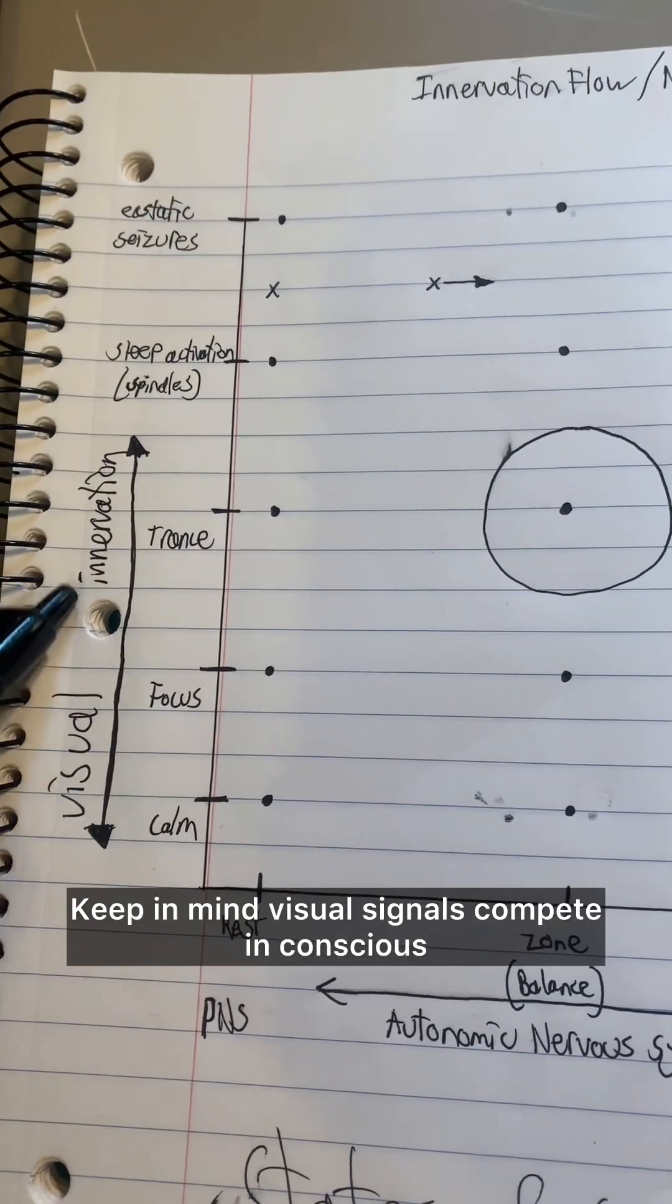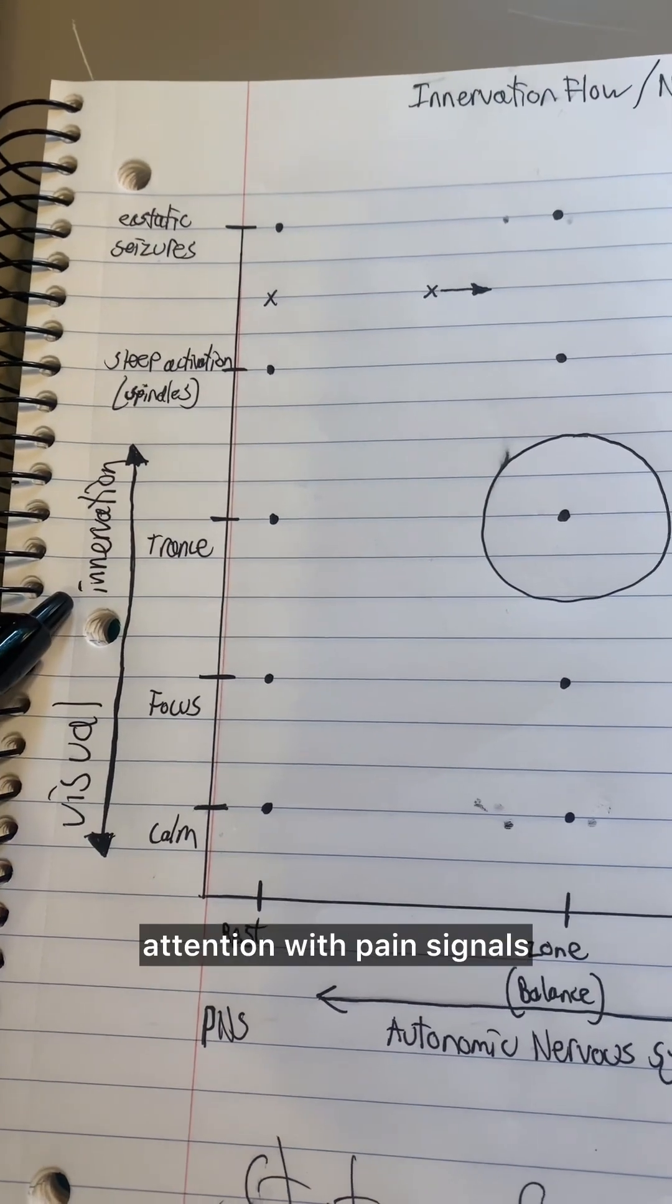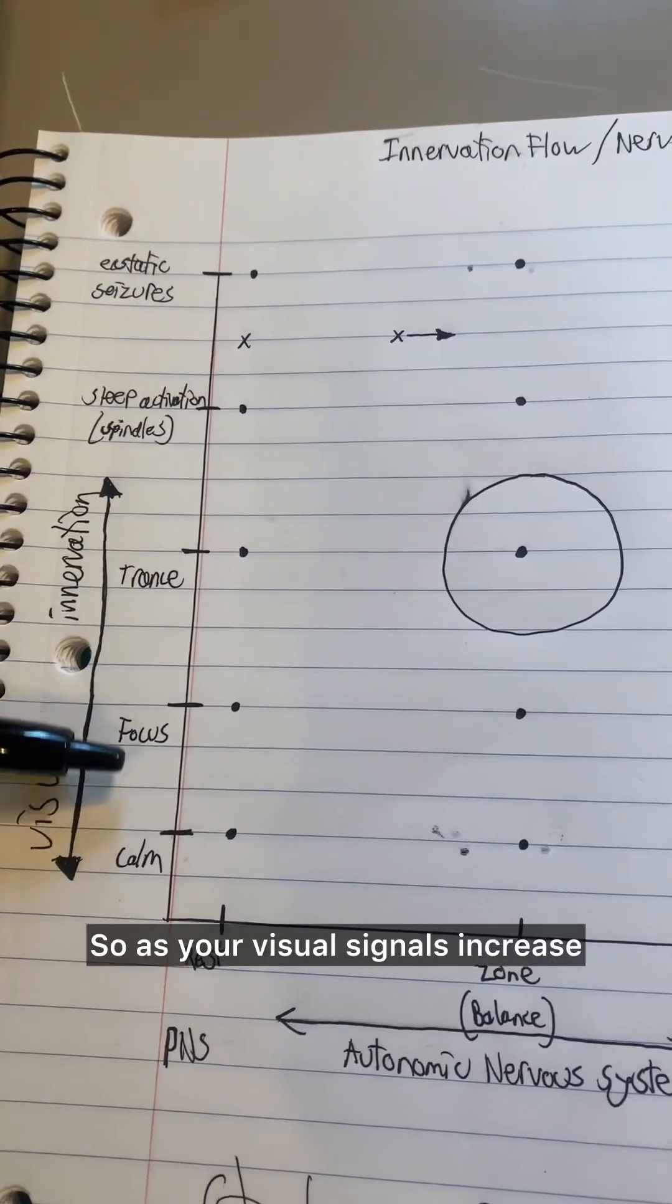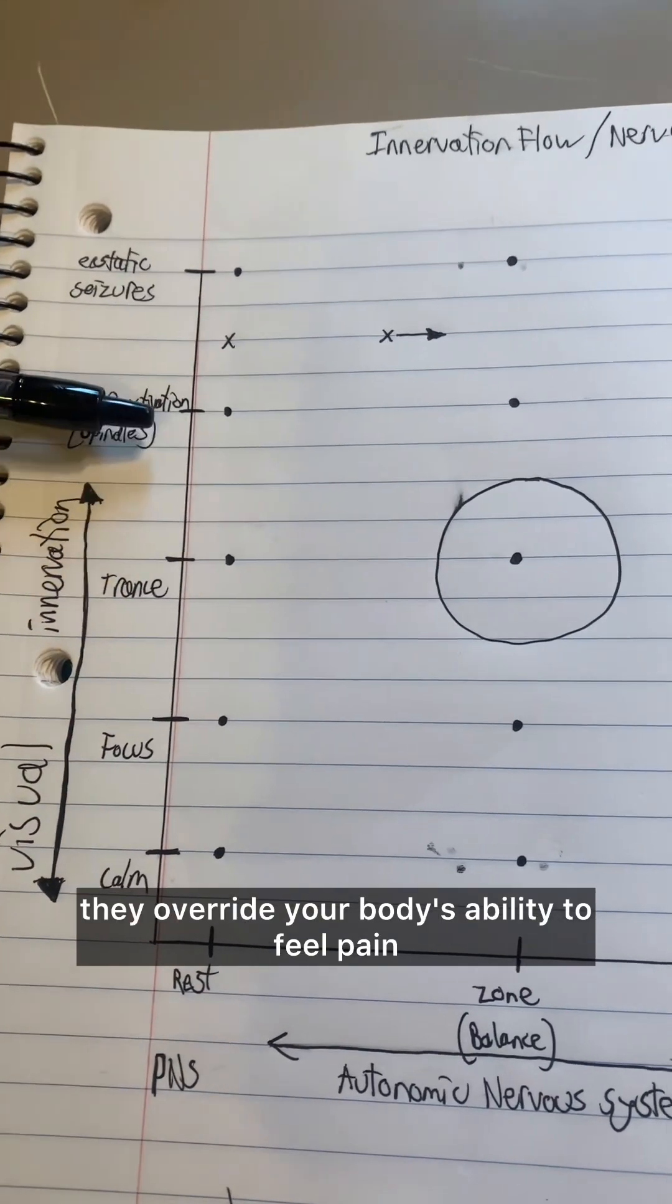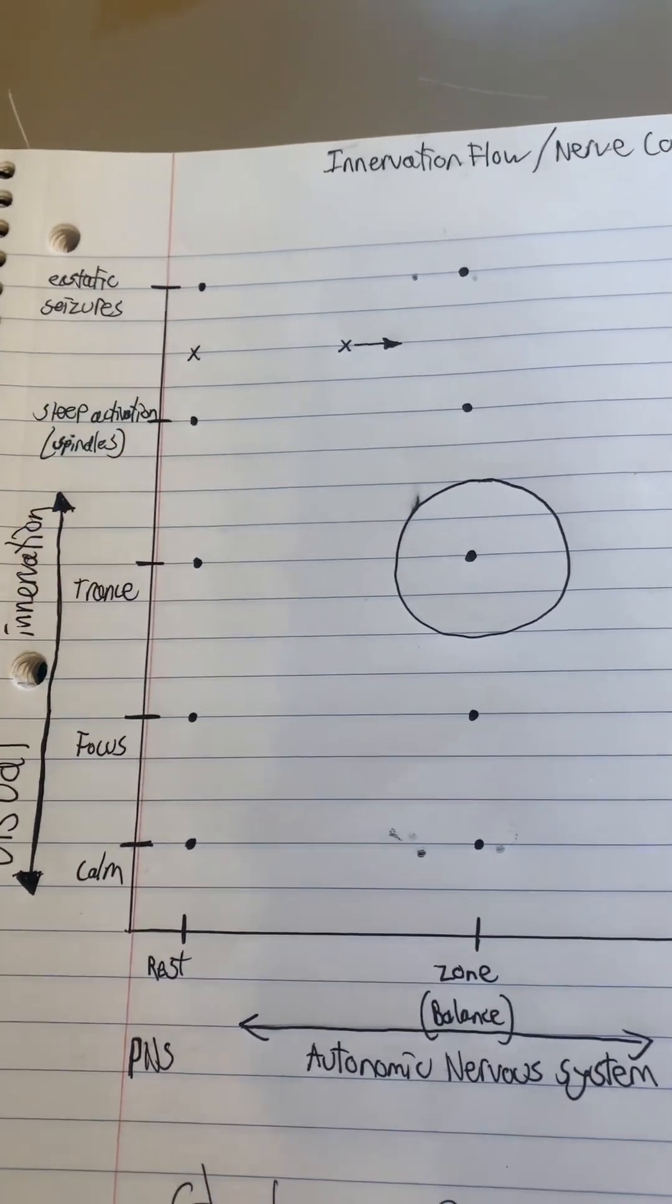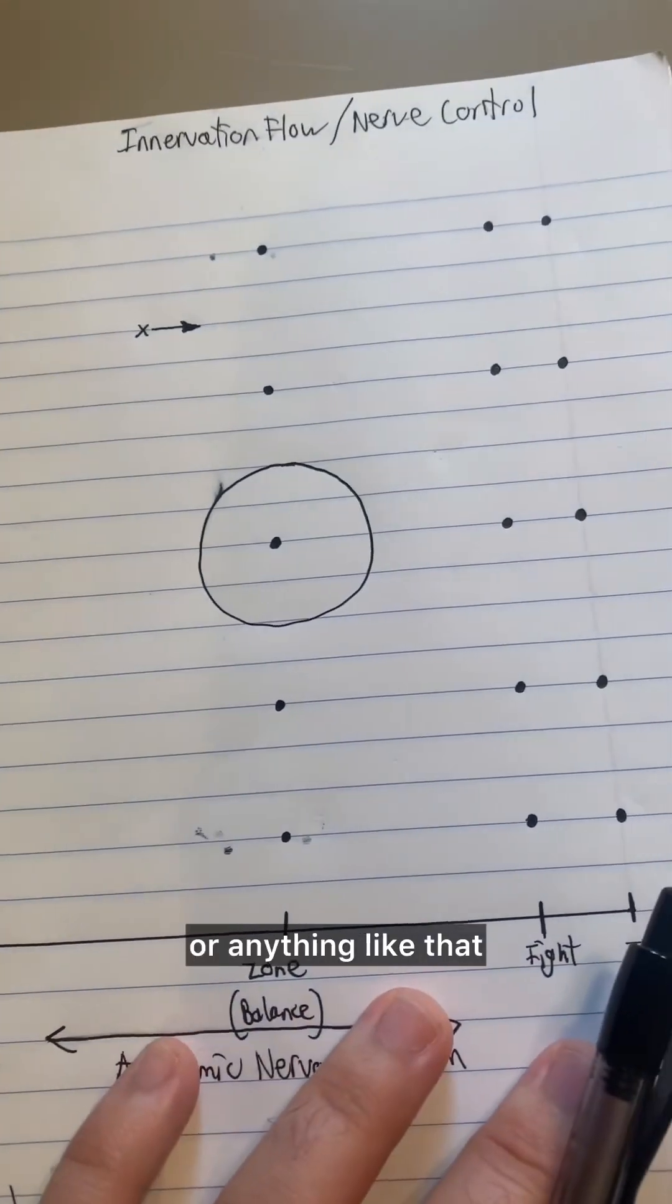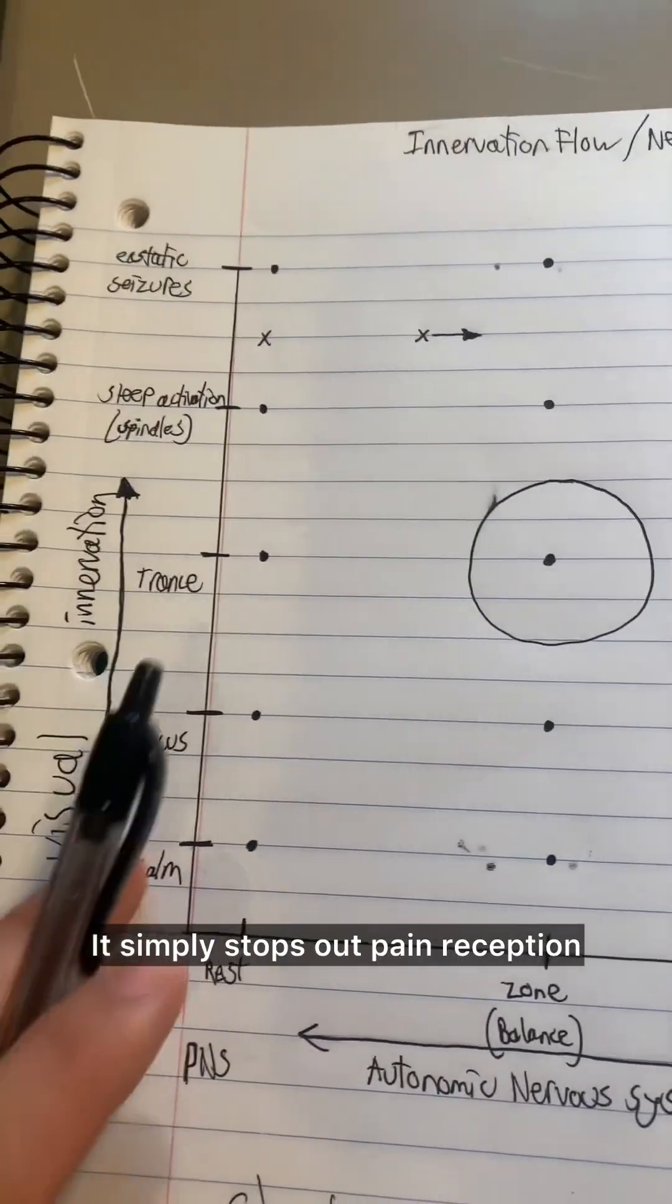Keep in mind, visual signals compete in conscious attention with pain signals. So as your visual signals increase, they override your body's ability to feel pain. That doesn't stop you from being able to move your body or anything like that. It simply stops out pain reception.